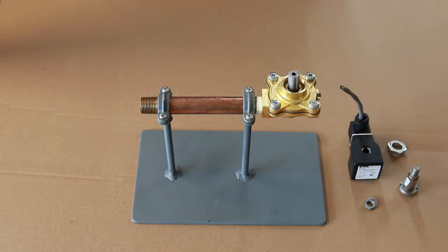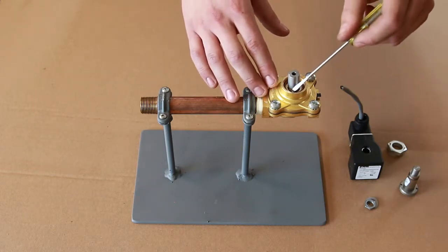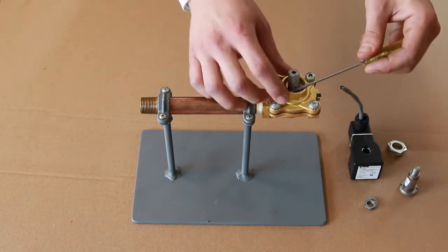With your small flat head screwdriver, remove the old stem o-ring and discard. Be careful not to damage the threads while removing this o-ring.